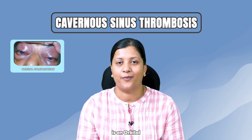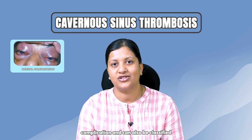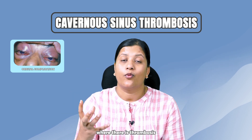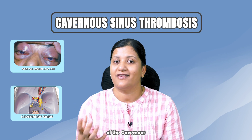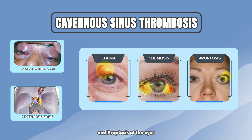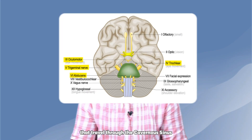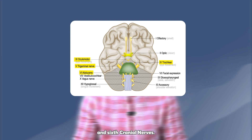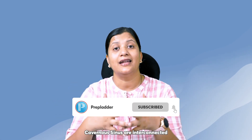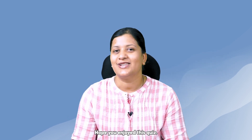Cavernous sinus thrombosis is an orbital complication and can also be classified as an intracranial complication, where there is thrombosis of the cavernous sinus causing edema, chemosis, and proptosis of the eyes. Along with that, there is involvement of the nerves that travel through the cavernous sinus — the third, fourth, fifth, and sixth cranial nerves. Since the right and left cavernous sinus are interconnected by the inter-cavernous sinus, the presentation is bilateral. Hope you enjoyed this quiz.